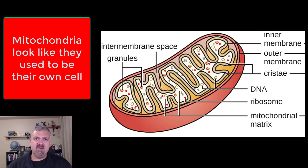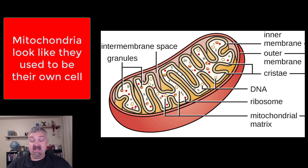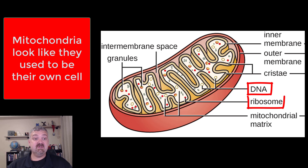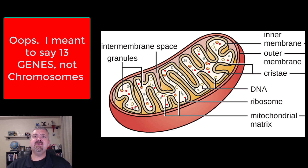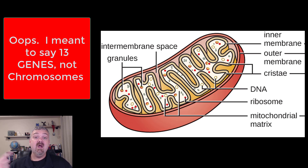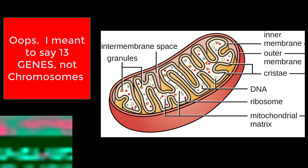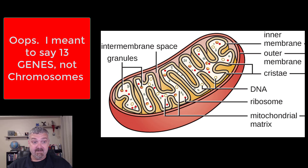We're going to focus on the mitochondria since a lot of what we're talking about is human-related, but imagine the story with the chloroplasts being the same. Some of the evidence that the mitochondria used to be its own organism comes from the fact that it has its own DNA and its own ribosomes. The DNA in the mitochondria is not the same as DNA from the nucleus. There are about 13 chromosomes still inside the mitochondria, though the mitochondria couldn't survive on its own because most of the genes that control it are now in the nucleus. The mitochondria's DNA looks more like bacterial DNA than other eukaryotic DNA.